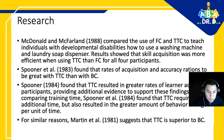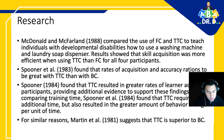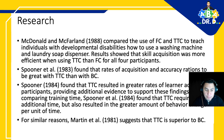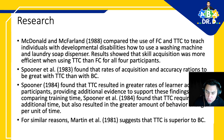Spooner et al. 1983 found rates of acquisition and accuracy to be greater with total task chaining than with backward chaining. Spooner 1984 found that total task chaining resulted in greater rates of learning across all participants. When comparing training times, Spooner et al. found that total task chaining required additional time but resulted in a greater amount of behavior change per unit of time. Martin et al. 1981 suggested total task chaining is superior to backward chaining.